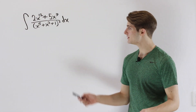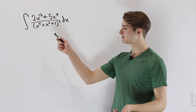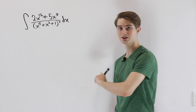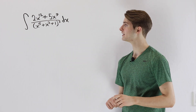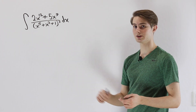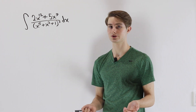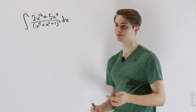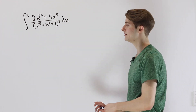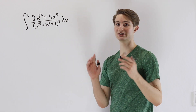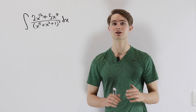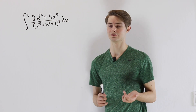We are going to do the integral of (2x¹² + 5x⁹) over (x⁵ + x³ + 1)³. Because we have a polynomial in the denominator raised to a power, we could try partial fraction decomposition. But if we're looking at x⁵ + x³ + 1, that is going to be a massive partial fraction decomposition — it's going to take forever. So we really want to look for a different method.